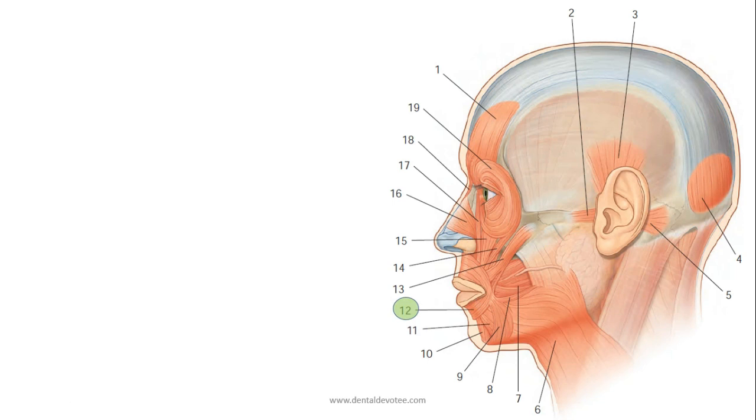And this circular muscle around the mouth is called orbicularis oris. Similarly, around the eye another set of circular muscle is present, that is orbicularis oculi. If it is related to eye, mouth it is oral, so orbicularis oris.